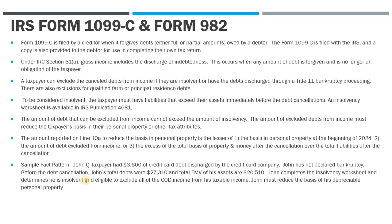Here's the fact pattern: John taxpayer has $3,600 of credit card debt that was canceled by the credit card company. John did not declare bankruptcy — he worked this out through the credit card company. Before the debt cancellation, his total debts were $27,310 and the total fair market value of his assets was $20,510. After completing the insolvency worksheet, he determines that he is insolvent because his debts are greater than his assets, so he completes the insolvency worksheet and Form 982.